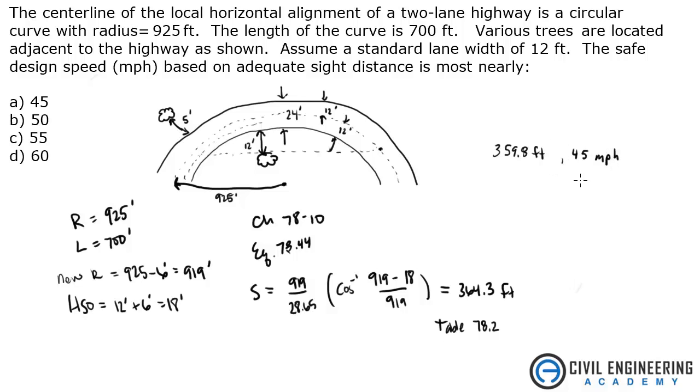So that would be the safe design speed. You don't want to round up, you're going to go down. So 45 miles per hour, the answer is A. This is a good problem. They usually have something like this about stopping sight distances on the exam. I hope this helped you out. Head on over to civilengineeringacademy.com for more tips and tricks related to the PE exam.